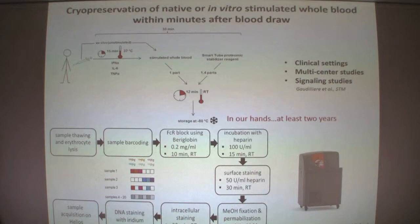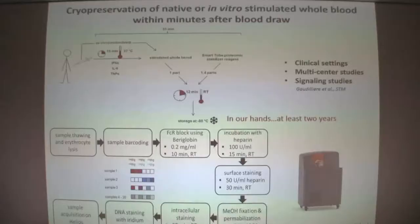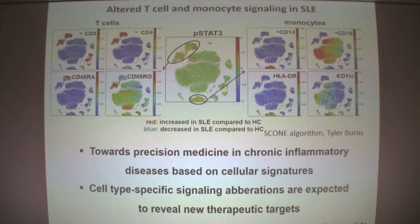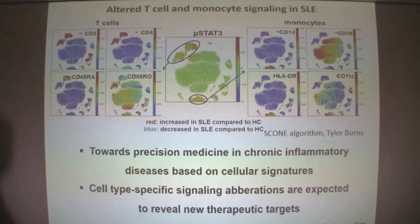For this, Marie set up a pipeline based on the SmartTube fixation system, which allows very quickly — within just 15 minutes — fixing the state of a blood sample and thereby preserving the intracellular signaling signature. She integrated this into a sample preparation pathway for mass cytometry and, using a few lupus patients, could already demonstrate certain deviations in lupus regarding the phosphorylation of STAT3. This is ex vivo data with no in vitro stimulation whatsoever. There is increased phospho-STAT3 expression and active STAT3 activation in T cells of lupus patients and also in monocytes.